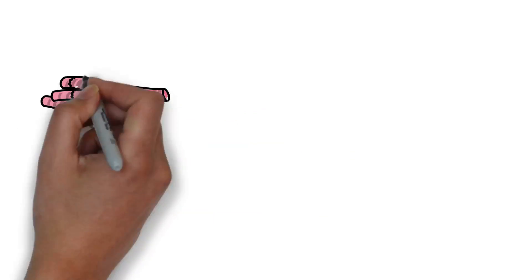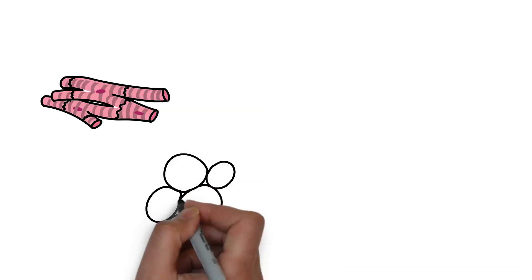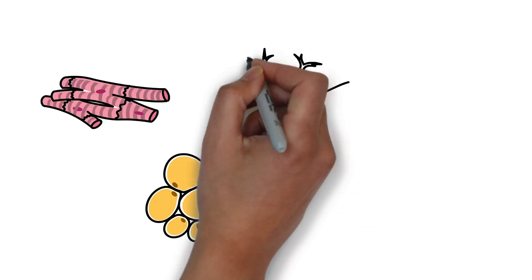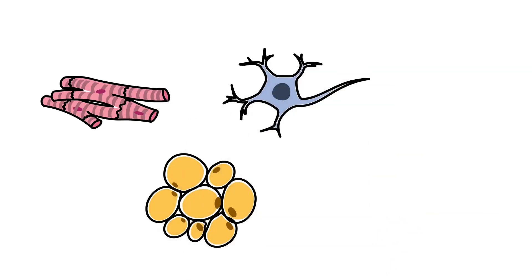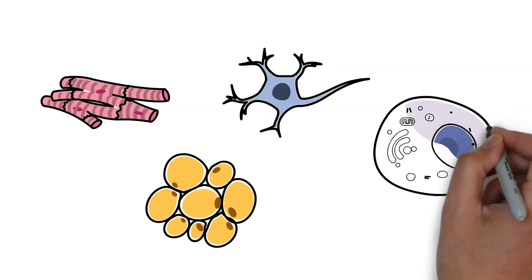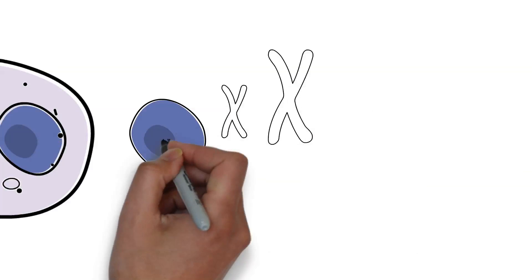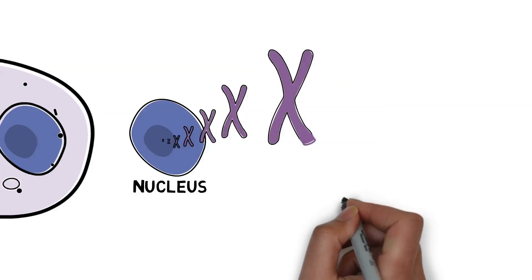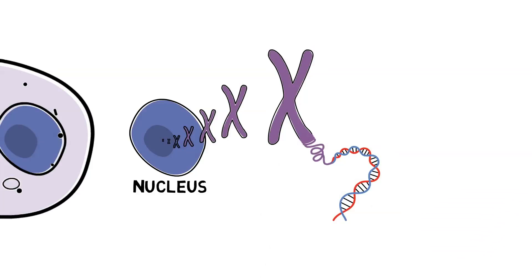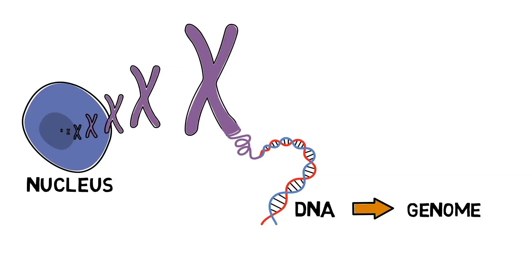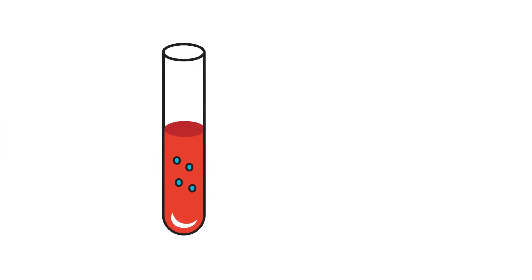The DNA instructs our cells to develop into different types of tissues. For example, there are heart cells, skin cells, and nerve cells, to name just a few. Each cell has a specific job to do, but they also have something in common. Most cells have a nucleus which contains the DNA. The DNA is like an instruction manual that guides how we grow and develop. These instructions are in the form of genes. Our DNA is also called our genome.